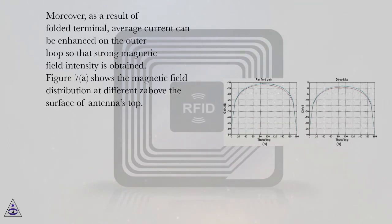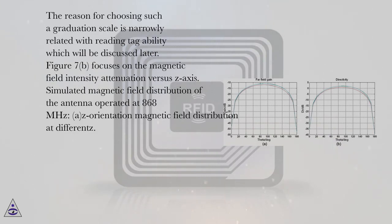Figure 7a shows the magnetic field distribution at different heights above the surface of antenna's top. The reason for choosing such a graduation scale is narrowly related with reading tag ability, which will be discussed later.